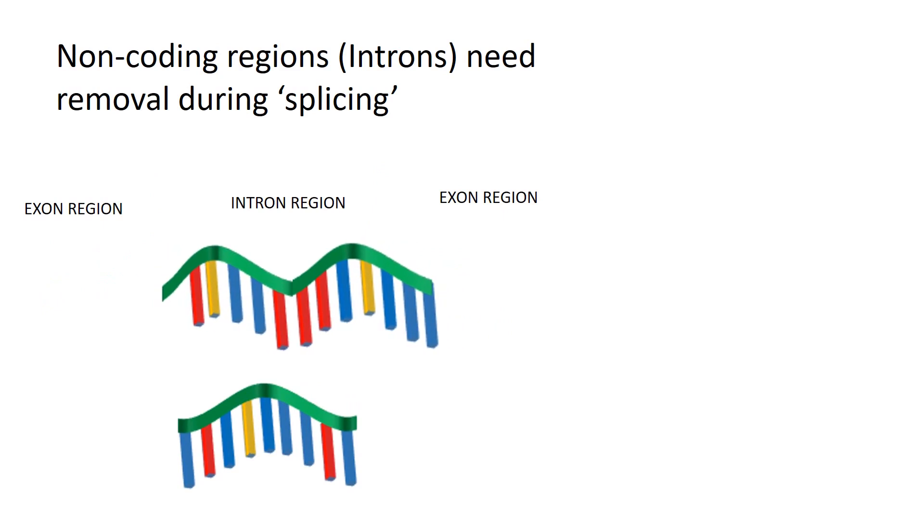These portions are called introns and need removal. Once edited, the RNA leaves the nucleus and the code is read by structures in the cytoplasm called ribosomes, which assemble the desired product in a process called translation.